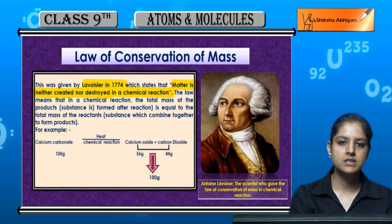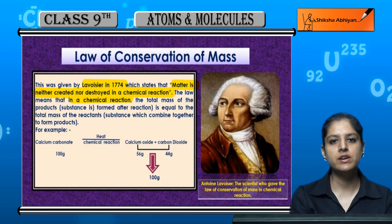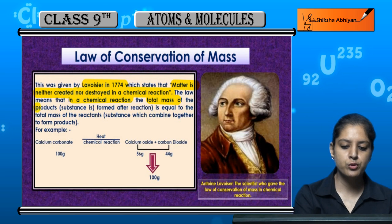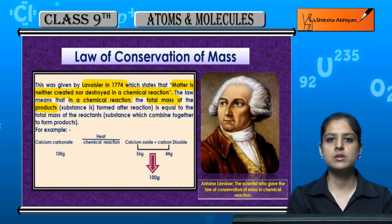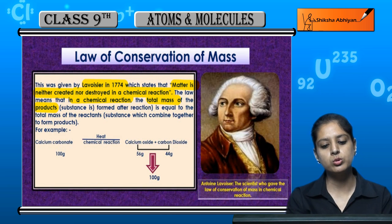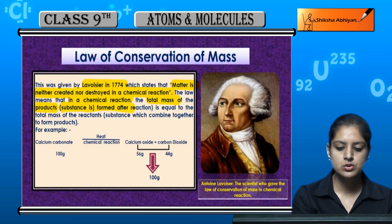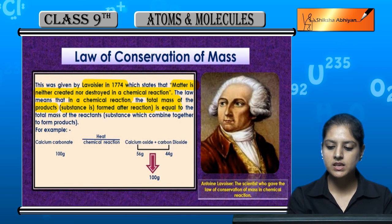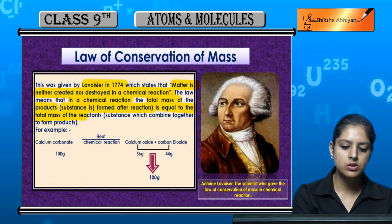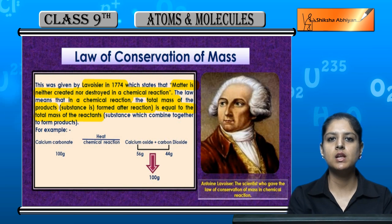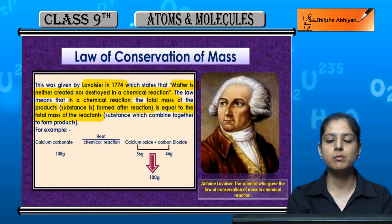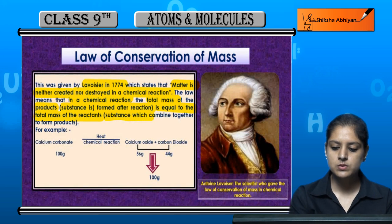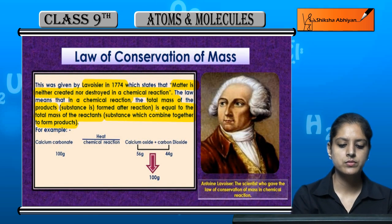The law means that in a chemical reaction, the total mass of the products — the substances formed after the reaction — is equal to the total mass of the reactants. Reactants are the substances that combine together in a chemical reaction to form the products.